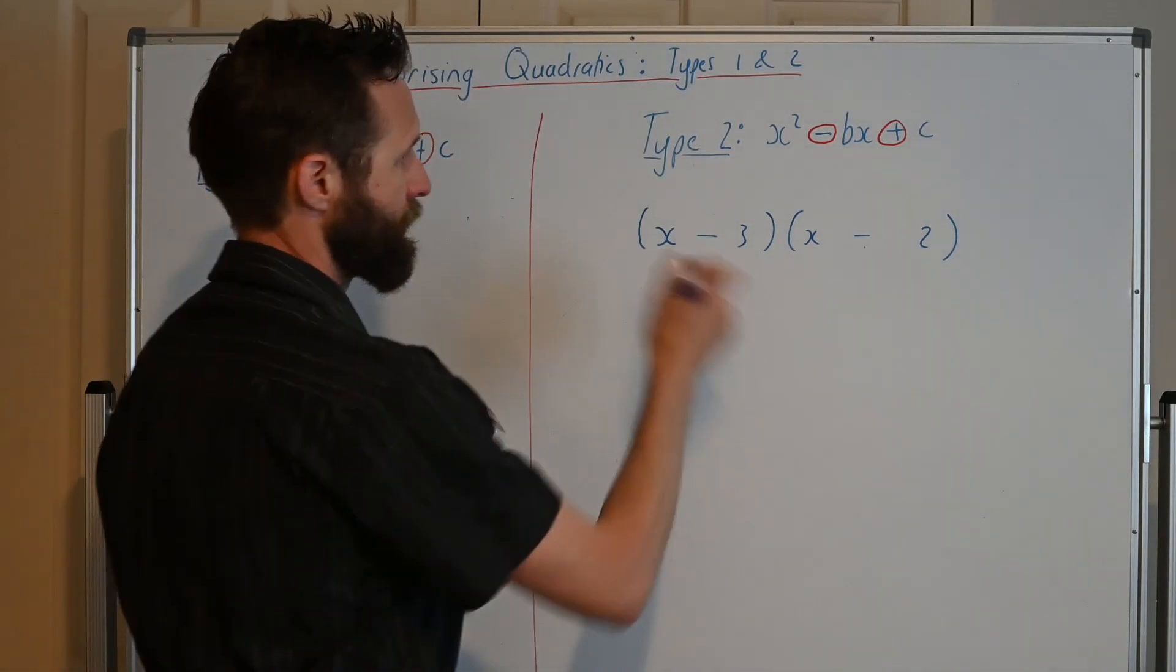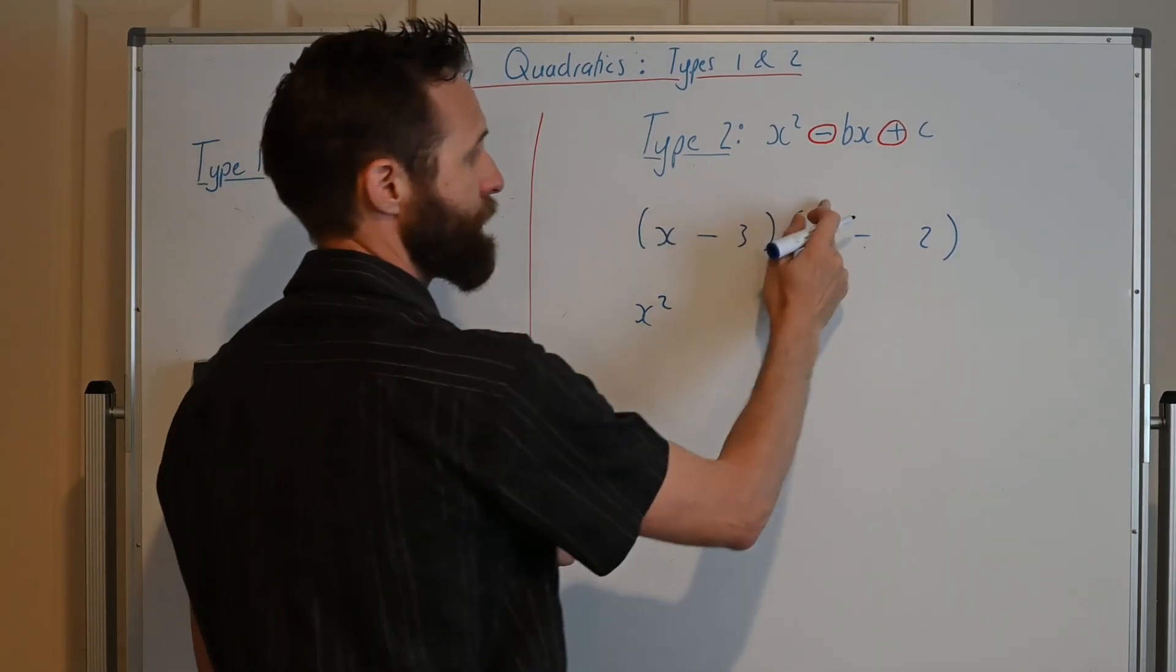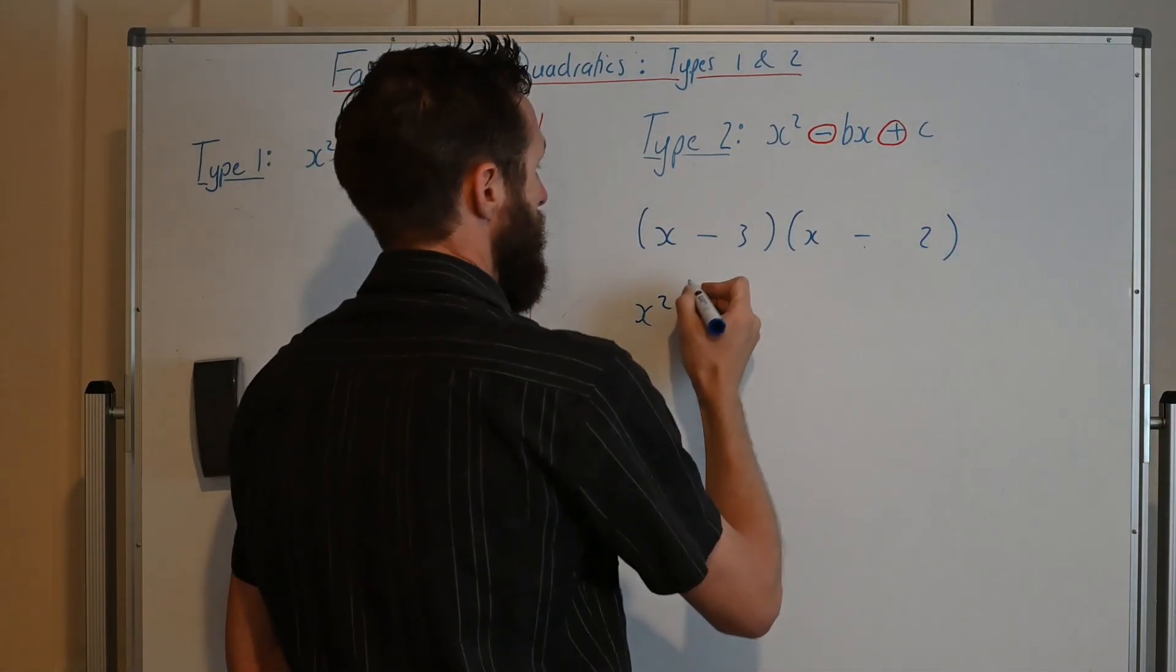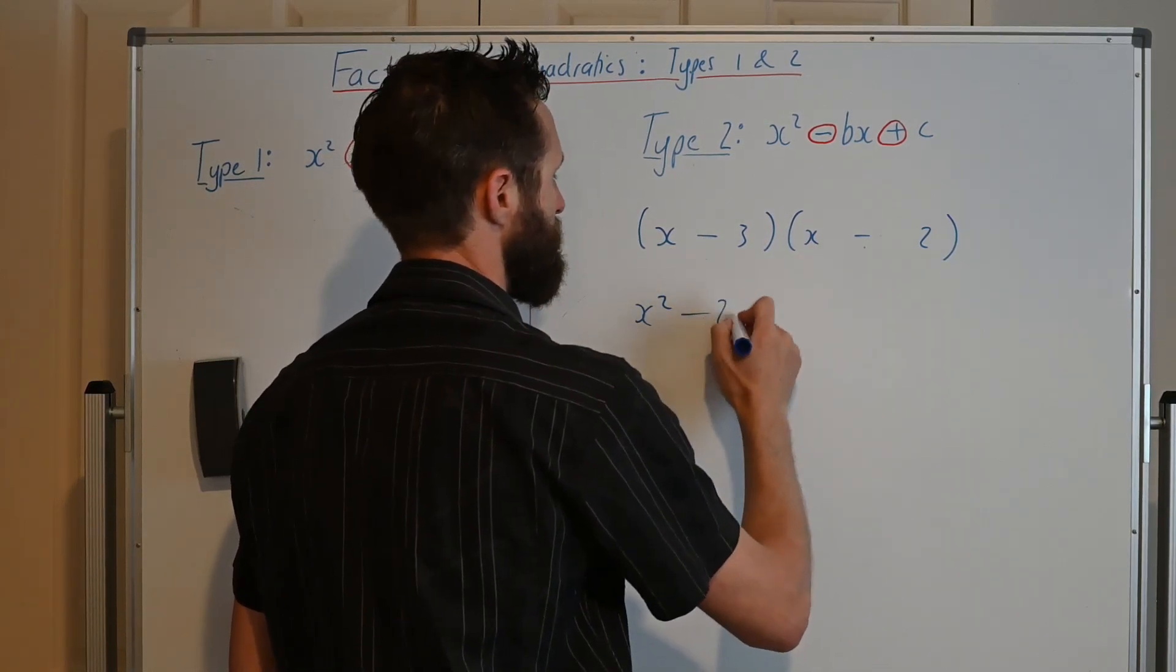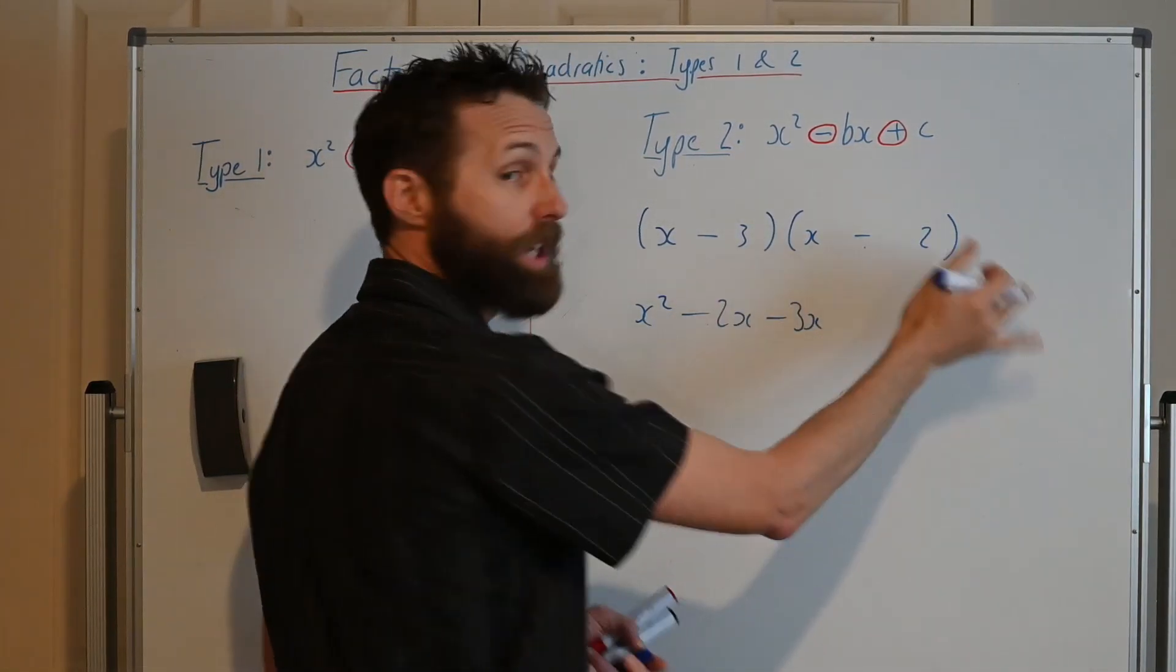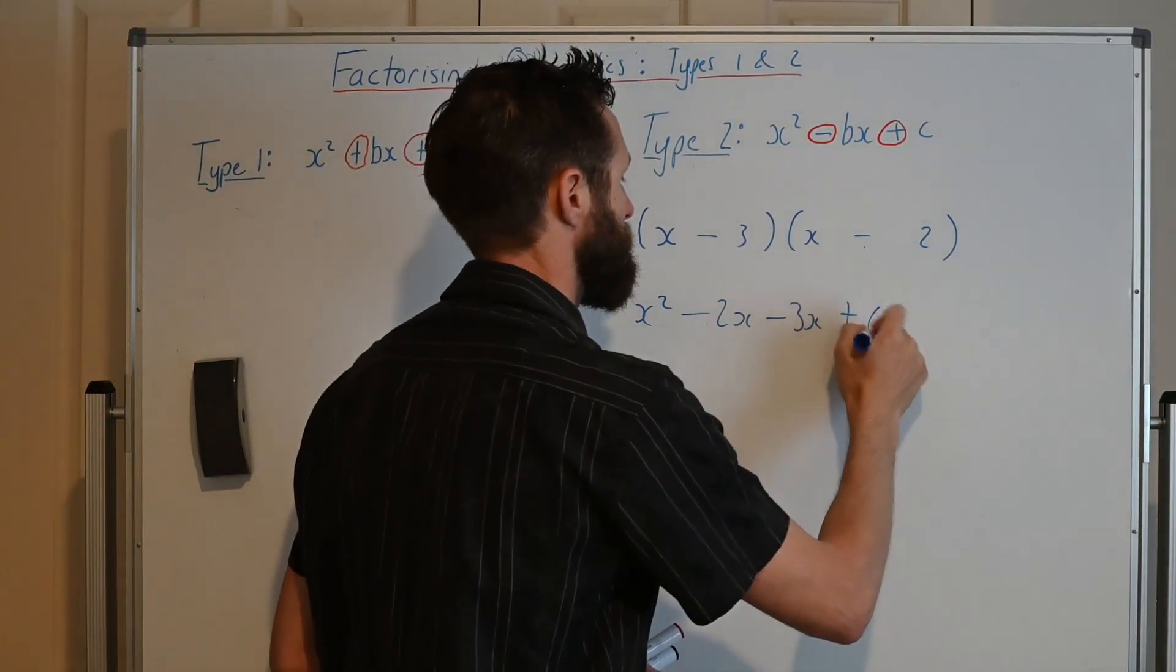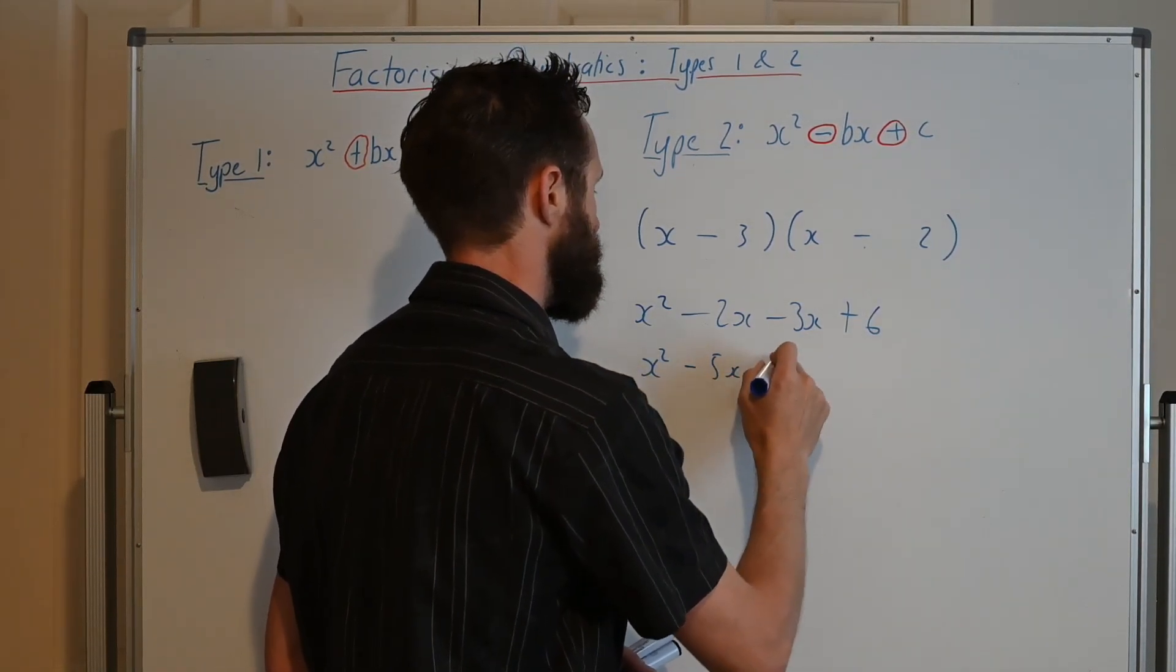So let's work this one out. What do we get? Well, we expand it. The first is x times x, x². O for outers, x times minus 2x is minus 2x. I is minus 3 times x is minus 3x, and then minus 3 times minus 2 is positive 6. So altogether we get x² - 5x + 6.